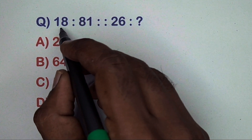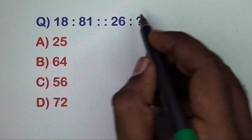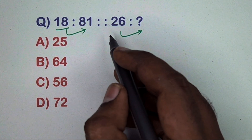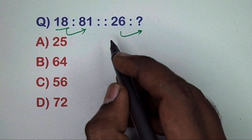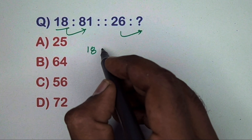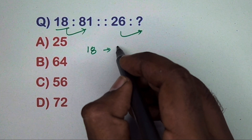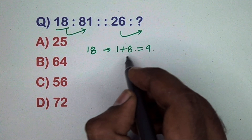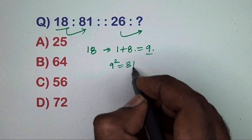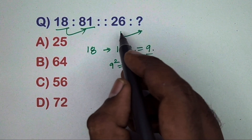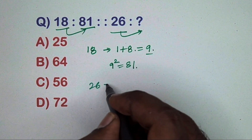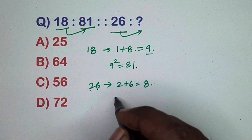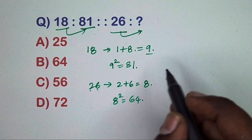Next question: 18 related to 81, so 26 related to which number? Find the relation. Take 18 — add individual digits: 1 plus 8 gives 9. Take 9 squared equals 81. Same way, take 26 — add individual digits to get 8, so 8 squared equals 64.